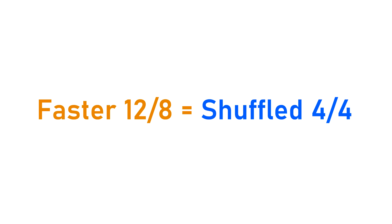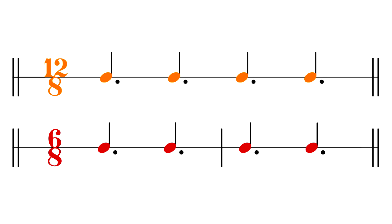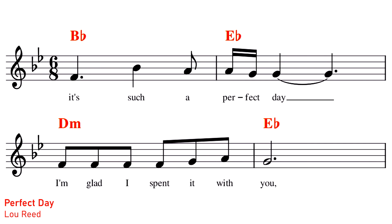At faster tempos, 12/8 is effectively a swung or shuffled 4/4. But at slower tempos, 12/8 is effectively the same thing as two bars of 6/8. So sometimes the same piece of music can be written down in either 6/8 or 12/8. For example, I would consider Lou Reed's 'Perfect Day' to be in 6/8 time, though I've seen other people transcribe this song in 12/8.